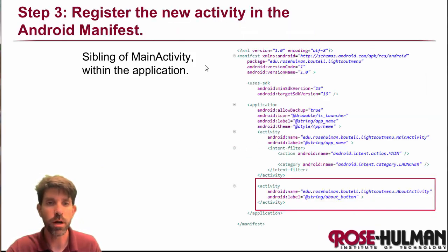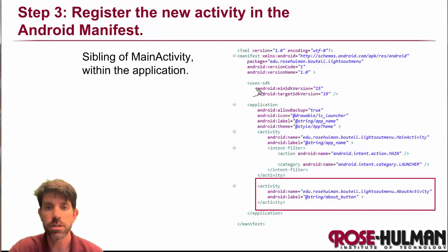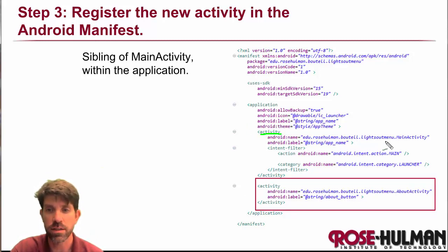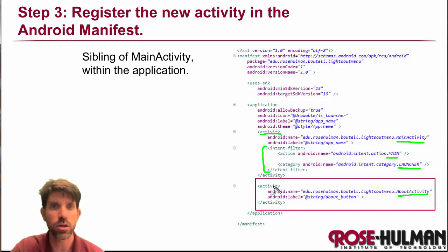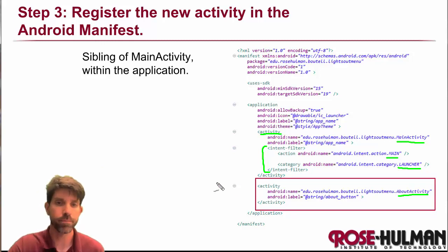Finally, open up the Android manifest XML file. You'll see it already has one activity — the main activity. What we need to do is create a new entry for our AboutActivity. The intent filter for 'main' and 'launcher' is set to the main activity, and the other one just means it can be launched from within the app.